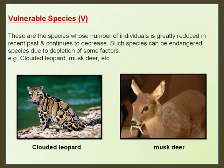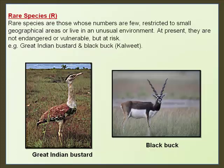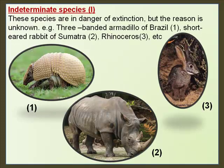Vulnerable species are those whose numbers have been greatly reduced in the recent past and continue to decrease; they can become endangered due to depletion of certain factors, e.g., Clouded Leopard and Musk Deer. Rare species are those whose numbers are few, restricted to a small geographical area, or live in an unusual environment; they are not yet endangered but are at risk, e.g., Great Indian Bustard and Black Buck. Indeterminate species are in danger of extinction but the reason is unknown, e.g., Three-Banded Armadillo of Brazil, Short-Eared Rabbit of Sumatra, and Rhinoceros.